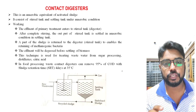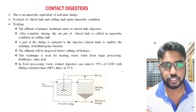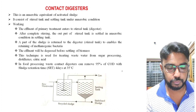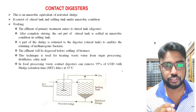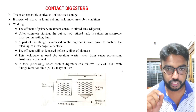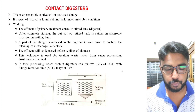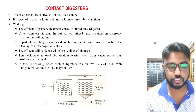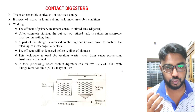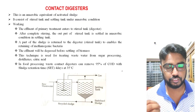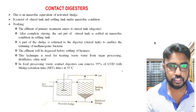This method of treatment is mainly used in sugar-producing industries, citric acid producing industries, and some distilleries also use this contact digesters method. In food processing waste, contact digesters can remove 91.5% of the COD by a sludge retention time of four days at 35 degrees Celsius.